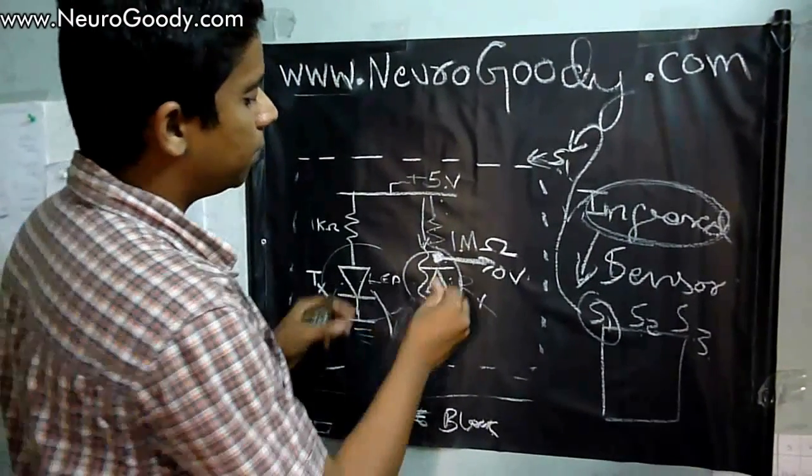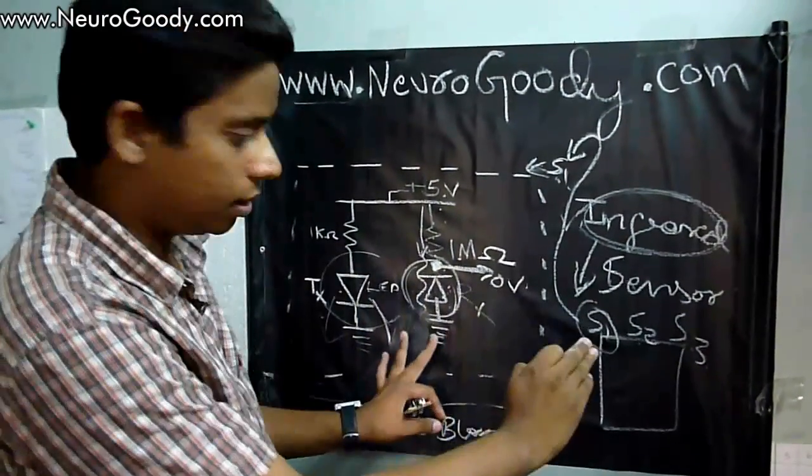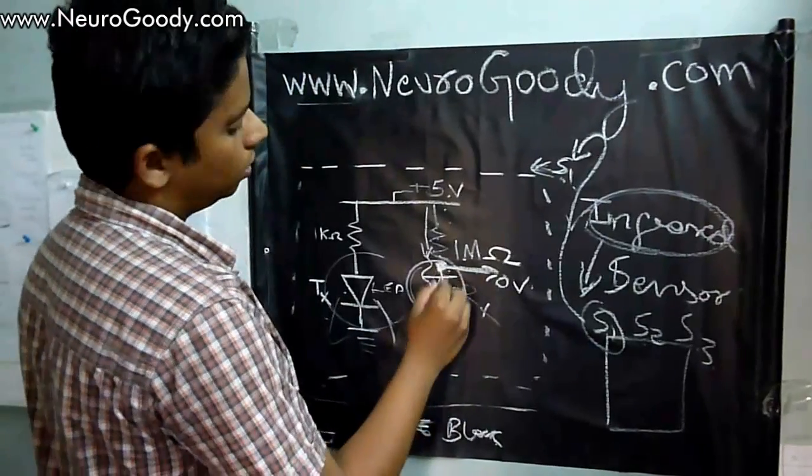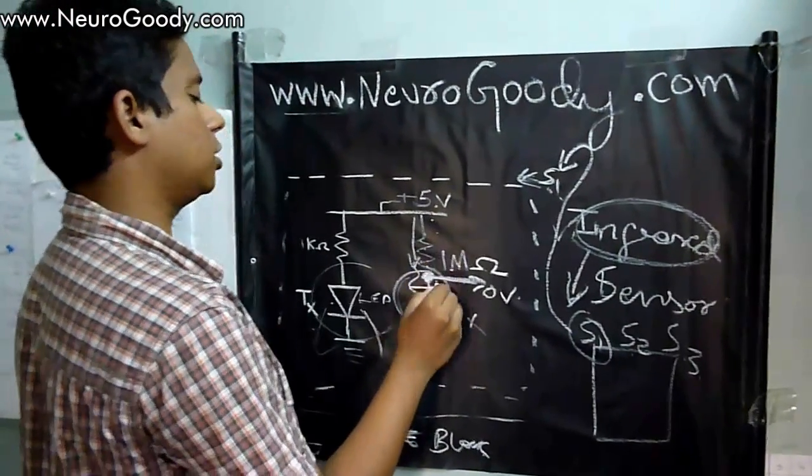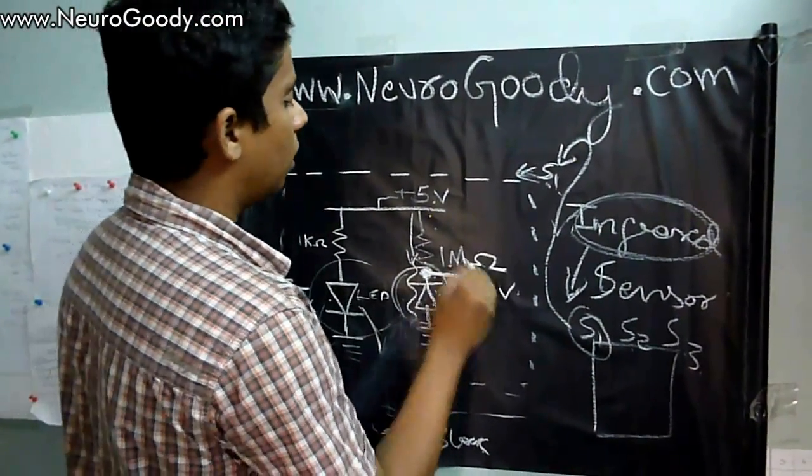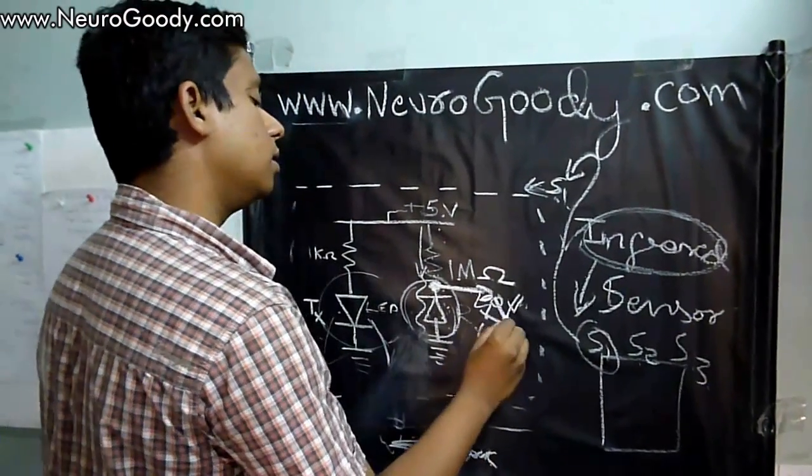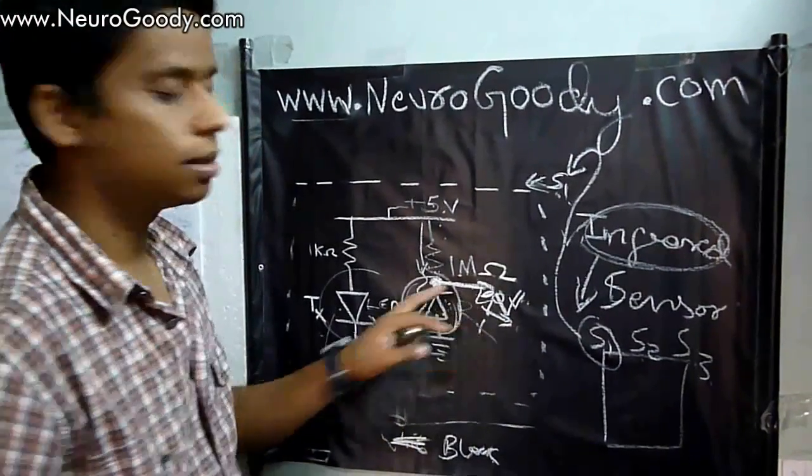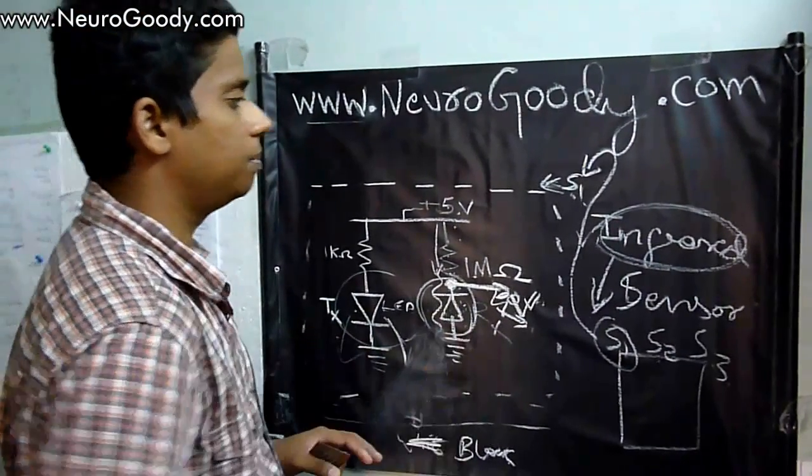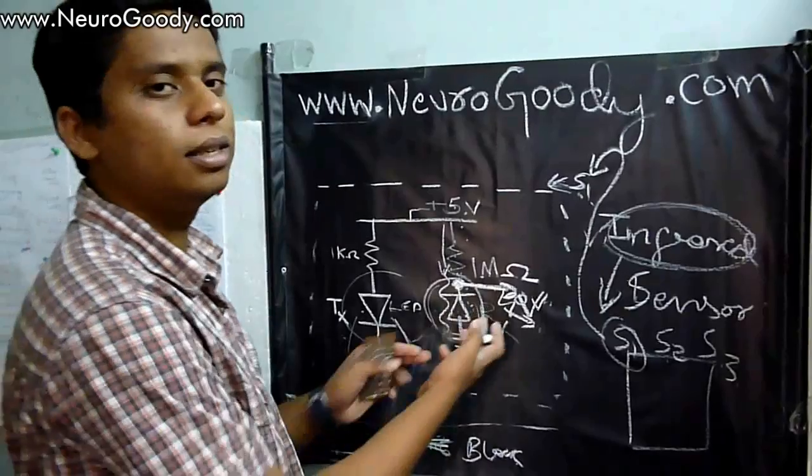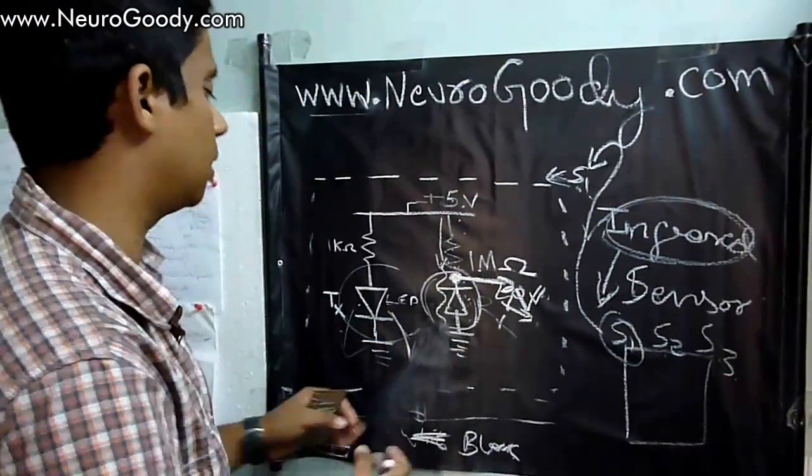When there aren't any reflected rays, the reverse breakdown of this diode does not occur. When we take an output between the one megaohm resistor and this diode, all the output, about five or four volts, will be seen across this diode.